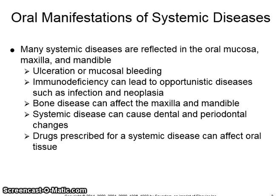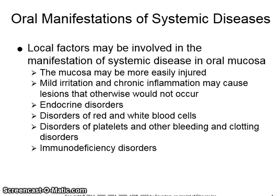Many systemic diseases are reflected in the oral mucosa, maxilla, and mandible. These manifestations can include ulceration or mucosal bleeding. Immunodeficiency can lead to opportunistic diseases such as infection and neoplasia. Bone disease can affect the maxilla and mandible. Systemic disease can cause dental and periodontal changes. Also, drugs prescribed for a systemic disease can affect the oral tissues. Local factors may be involved in the manifestation of systemic diseases in oral mucosa.